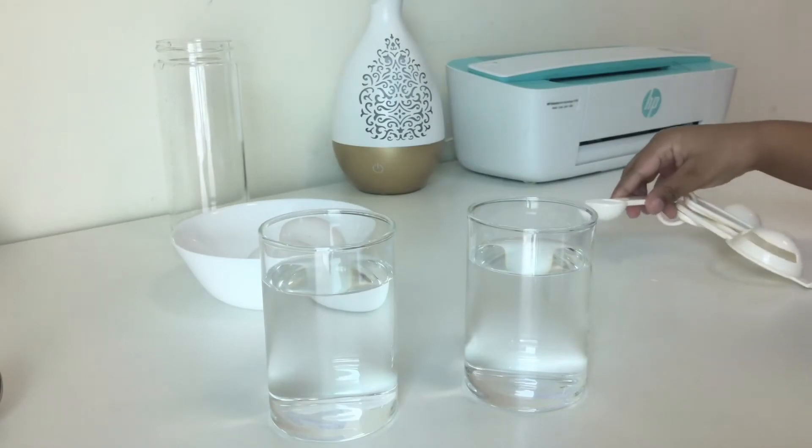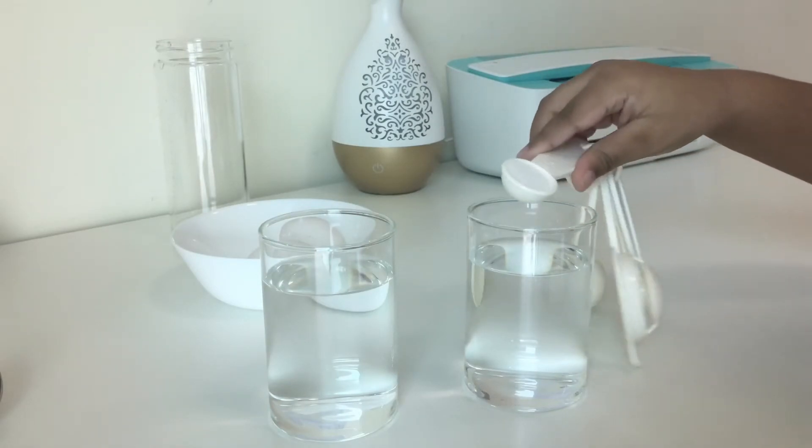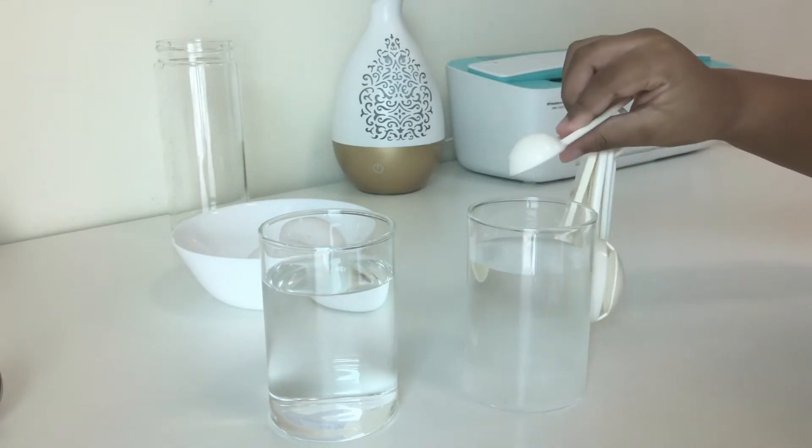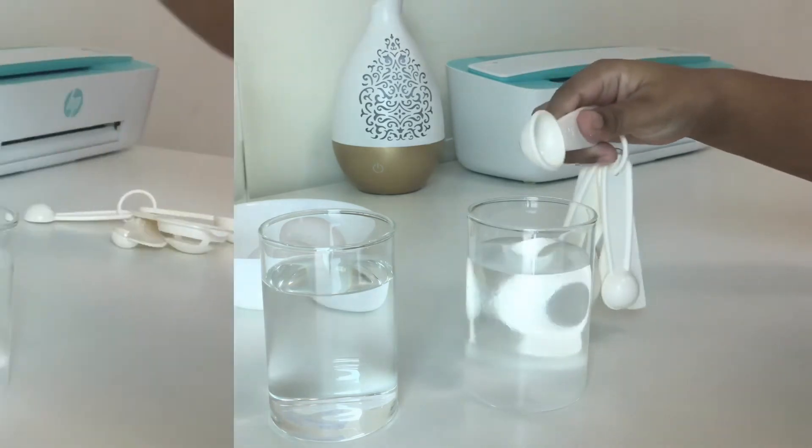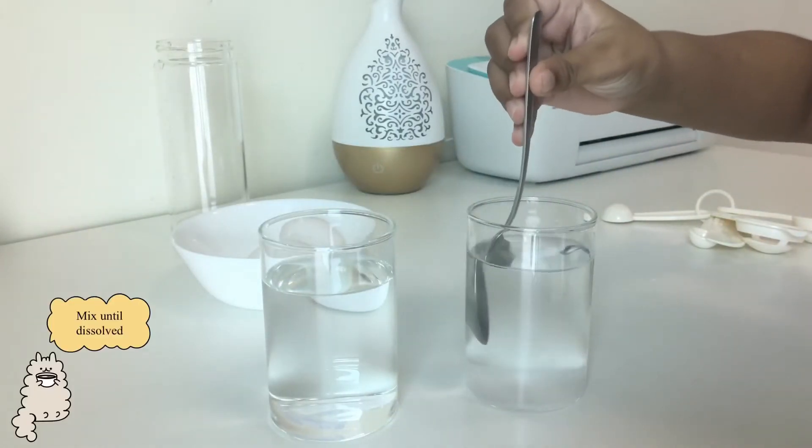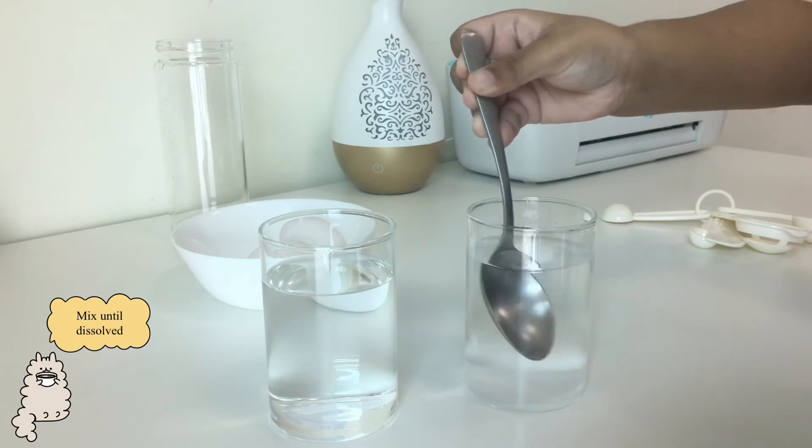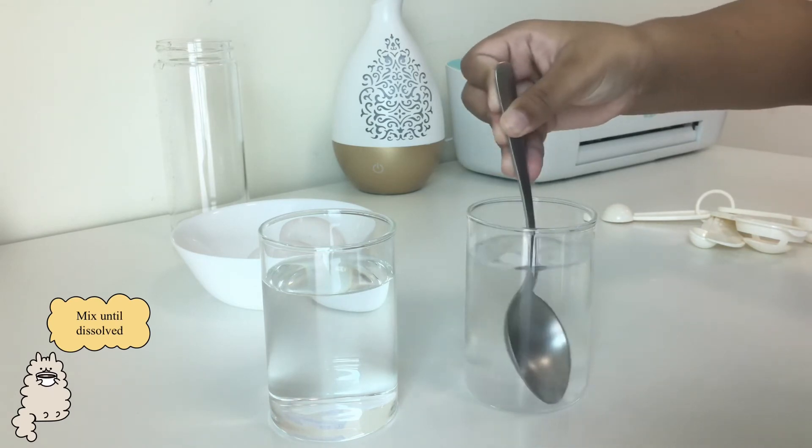Add a spoon of salt to only one glass. You can add more if required. Mix until the salt is completely dissolved.